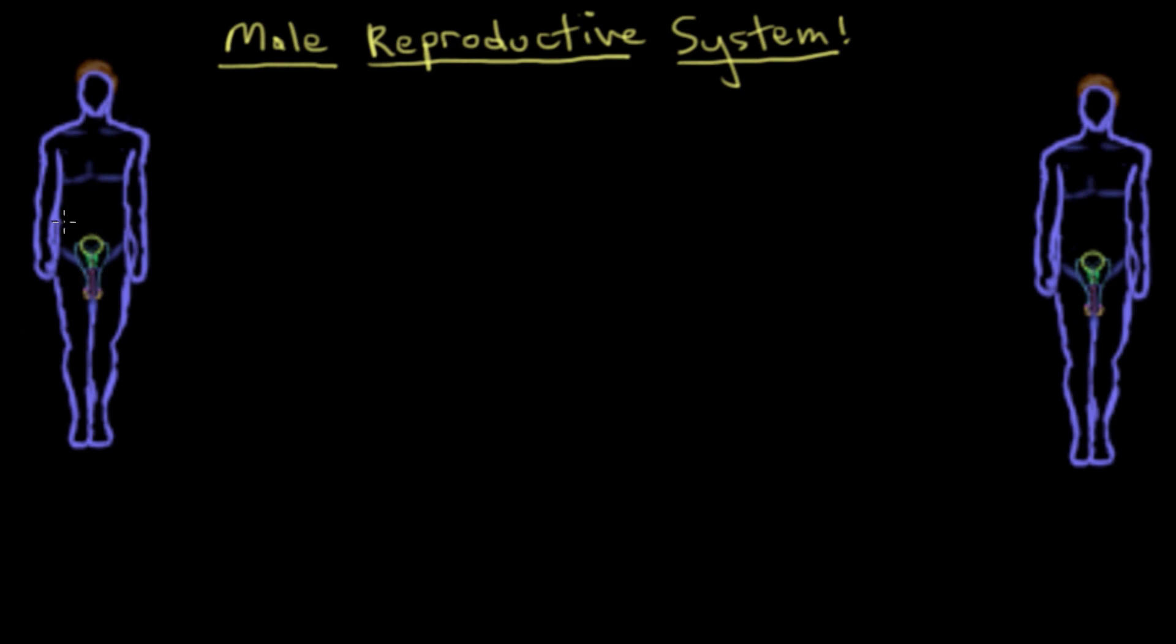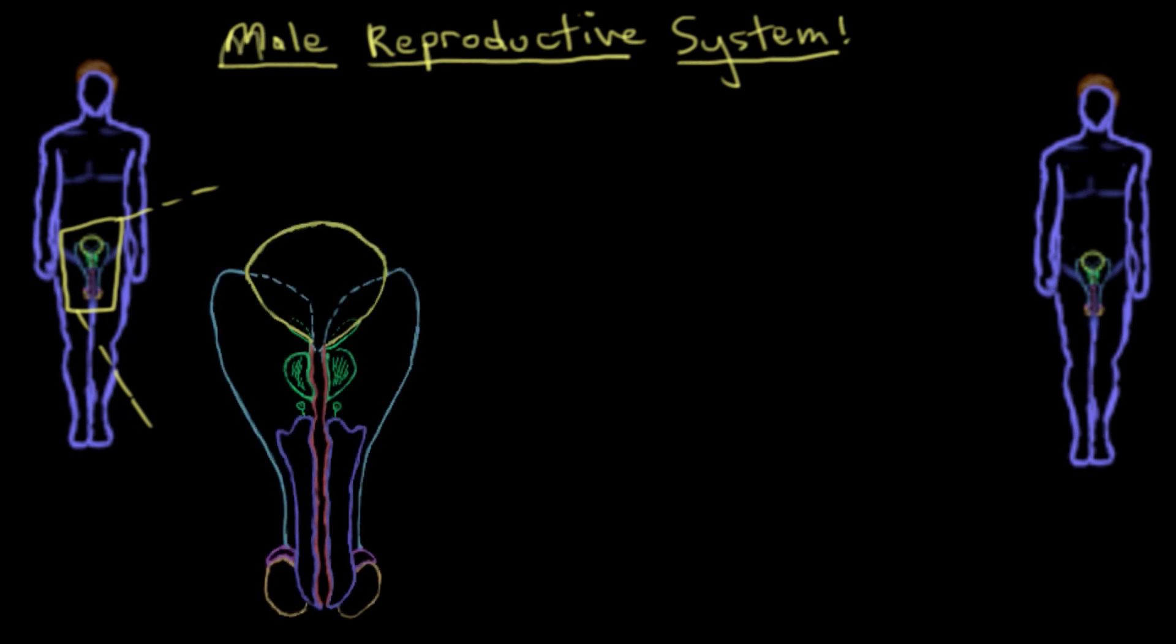The first view we'll take a look at is called an anterior view. And what that is, is basically we take everything in this box here, and we'll blow it up for you. That's basically what you see there.